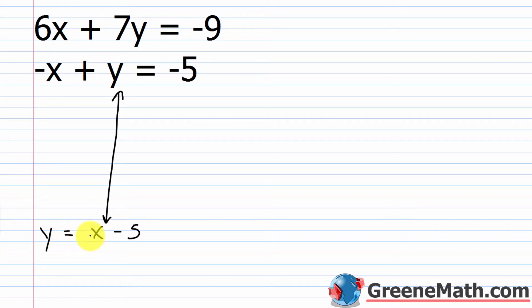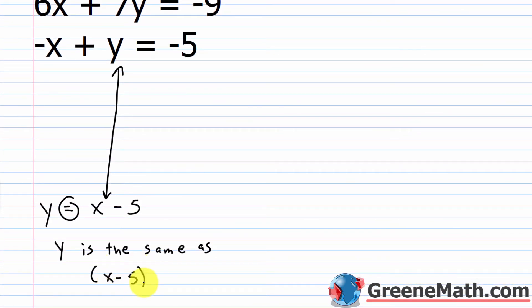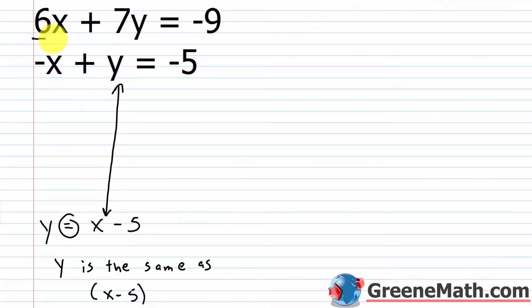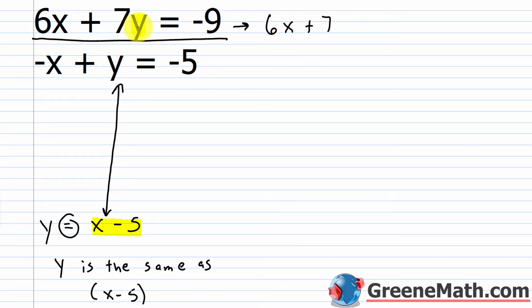y equals x minus 5 means y is the same as the quantity x minus 5. Think of it like money: a $100 bill and five $20 bills are the same in value, just looking different. So because y and x minus 5 are the same, I can go into the other equation and plug in x minus 5 wherever I see y. I'll have 6x plus 7 times the quantity x minus 5 equals negative 9. Make sure you use parentheses.